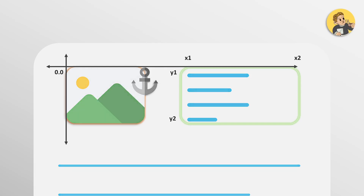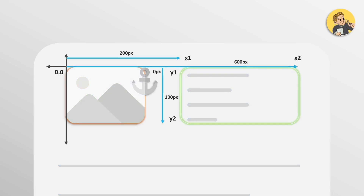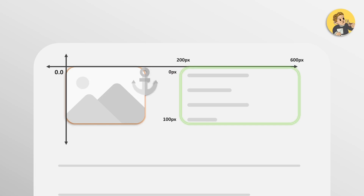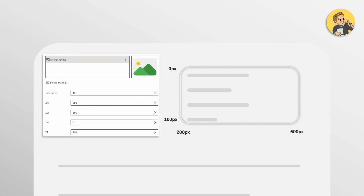To specify the region, we again measure the pixel distances for Y1, Y2, X1, and X2. In the example, X1 is 200 pixels from the top-left corner of our anchor image, X2 is 600 pixels from it, Y1 is zero pixels (same height as Y0), and Y2 is 100 pixels from Y0. We select our image as the reference and give the values 200, 600, 0, and 100 for X1, X2, Y1, and Y2. That is how you extract text relative to an image.